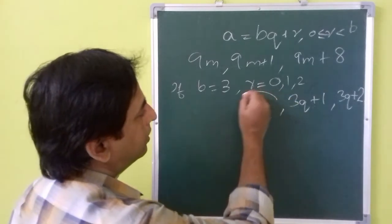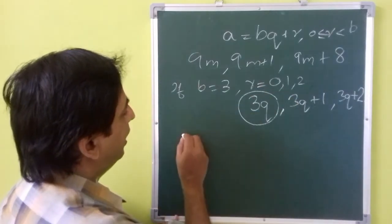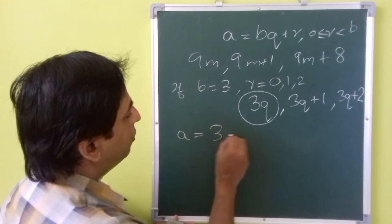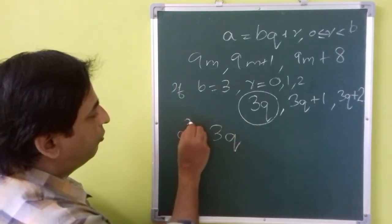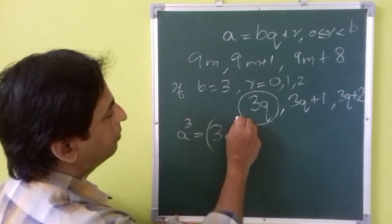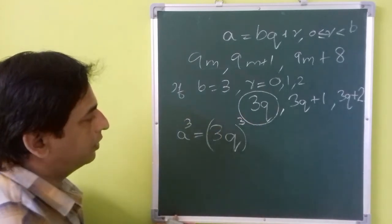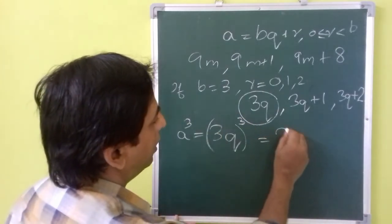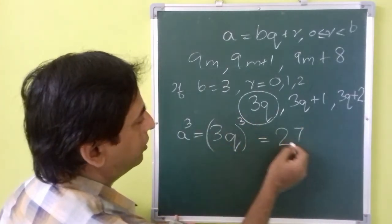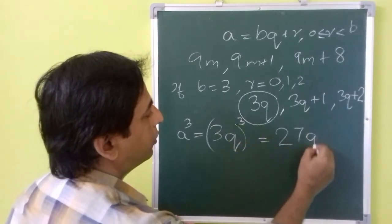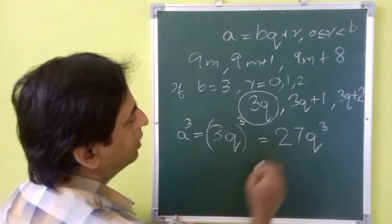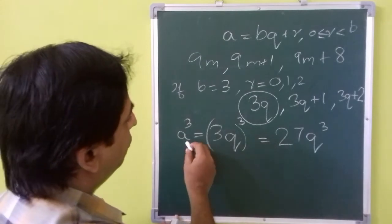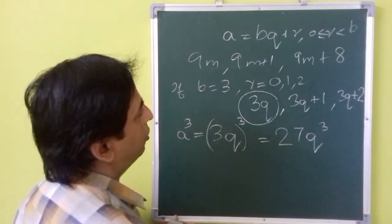Take these 3 cases and cube it. So here a is equal to 3q, then a cube will be equal to 3q to the power 3, which is equal to 27q cube. So that means we have got the cube of a positive integer is 27q cube.